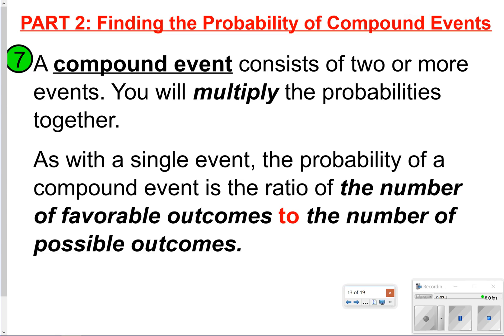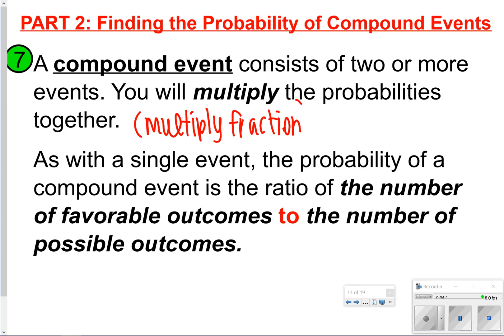Number seven in your notes is your second vocabulary term — compound events. That's when events consist of two or more events, and you multiply the probabilities together. This is just like multiplying fractions, taking it back to chapter two. Make sure you simplify the outcome once you get it. Pause the video to write this down, then click play.